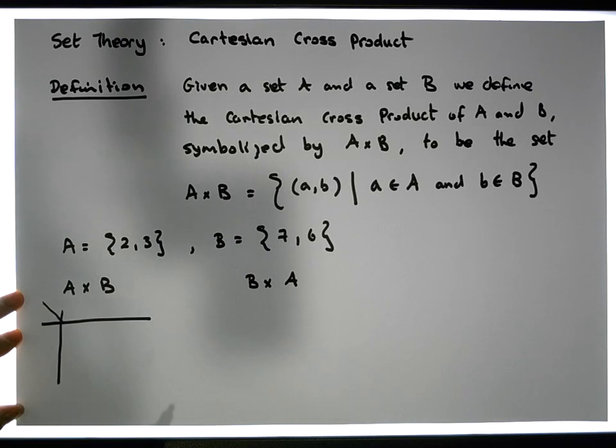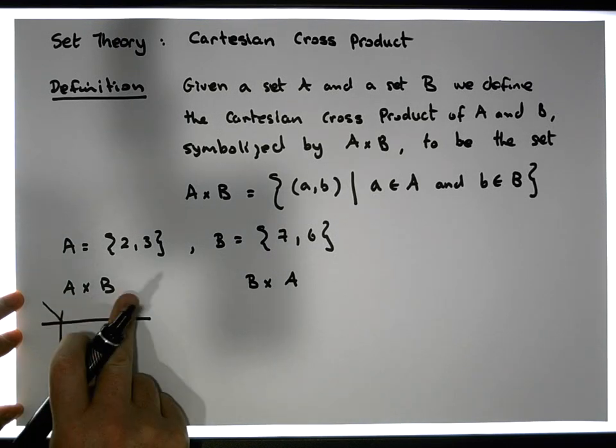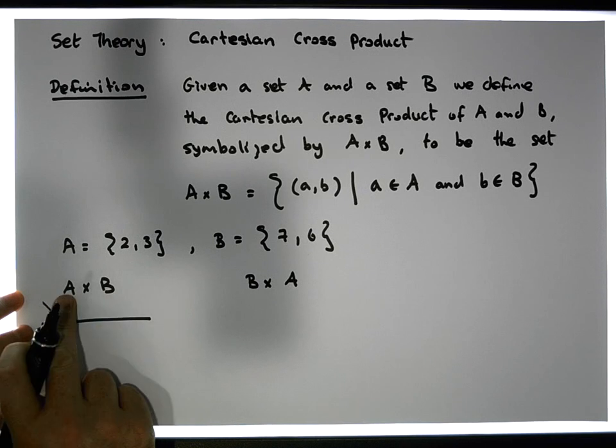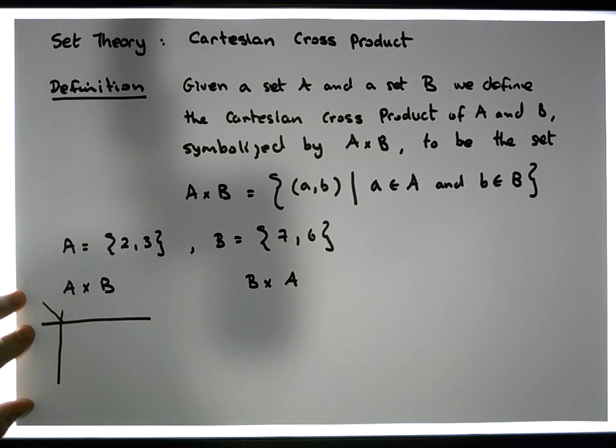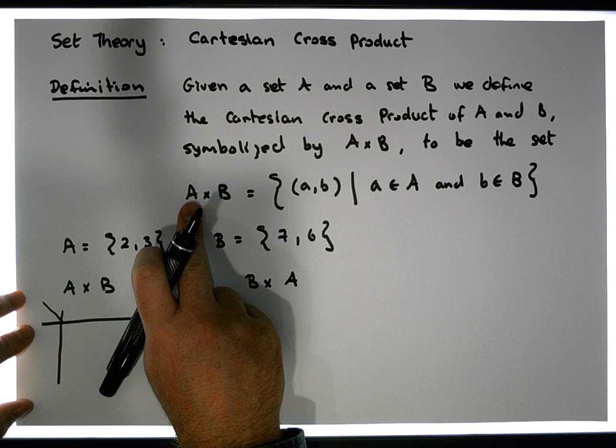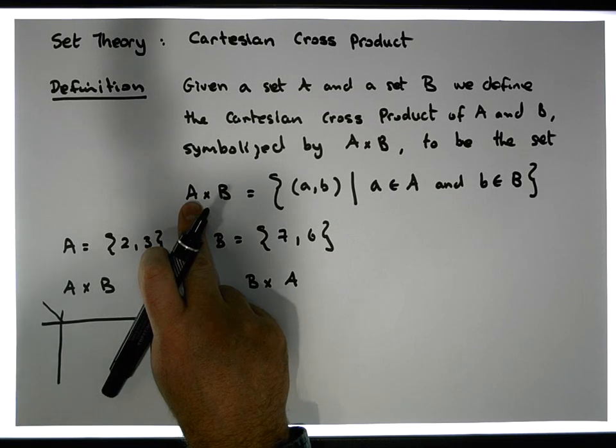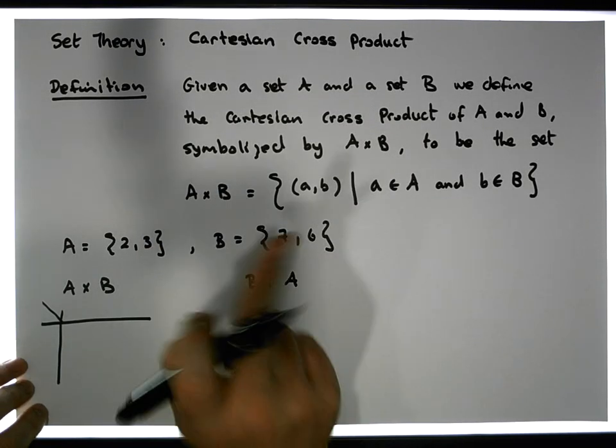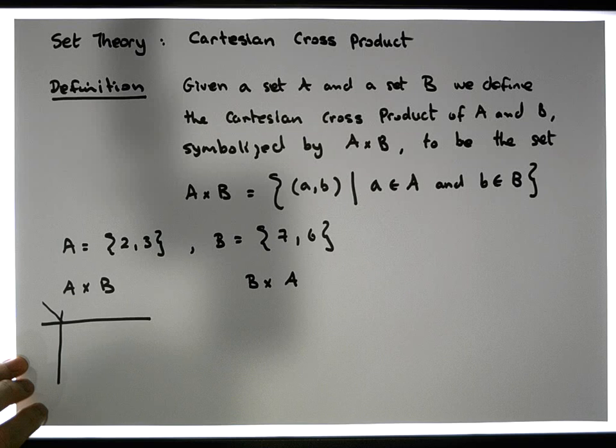And what we do is, we give these particular sets where they occur a particular name. The set that occurs first in the cross product is called the domain, and the set that occurs second is called the range, and sometimes the codomain.